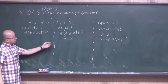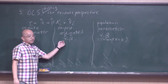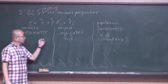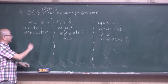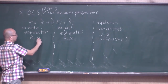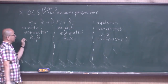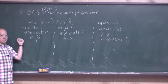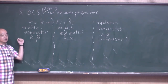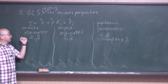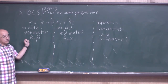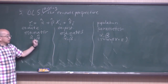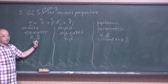We can also consider alpha and beta from the x-ante perspective. From the x-ante perspective, alpha-hat and beta-hat are estimators — they are random variables. As random variables, they each have a mean and a variance.